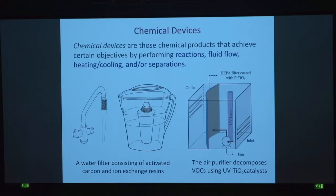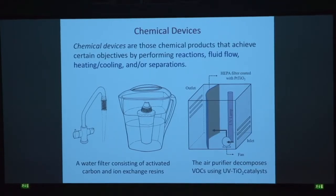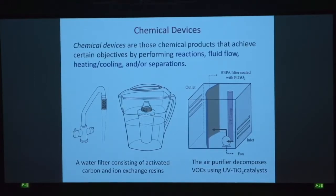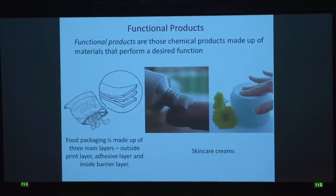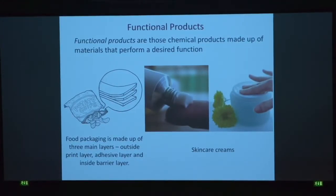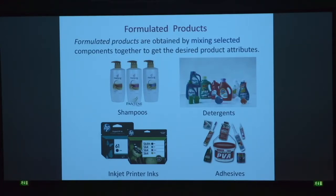We can classify B2C products in different ways. One is what we refer to as a chemical device — products that achieve certain objectives by performing reactions, fluid flow, heating, and cooling. Examples include water filters and air purifiers that we use at home. These devices can be considered miniature chemical plants. The second type is functional products — made up of materials that perform a desired function. Skincare creams and food packaging are examples. The third type is formulated products, obtained by mixing selected components together to get desired product attributes. Shampoos and adhesives are examples.